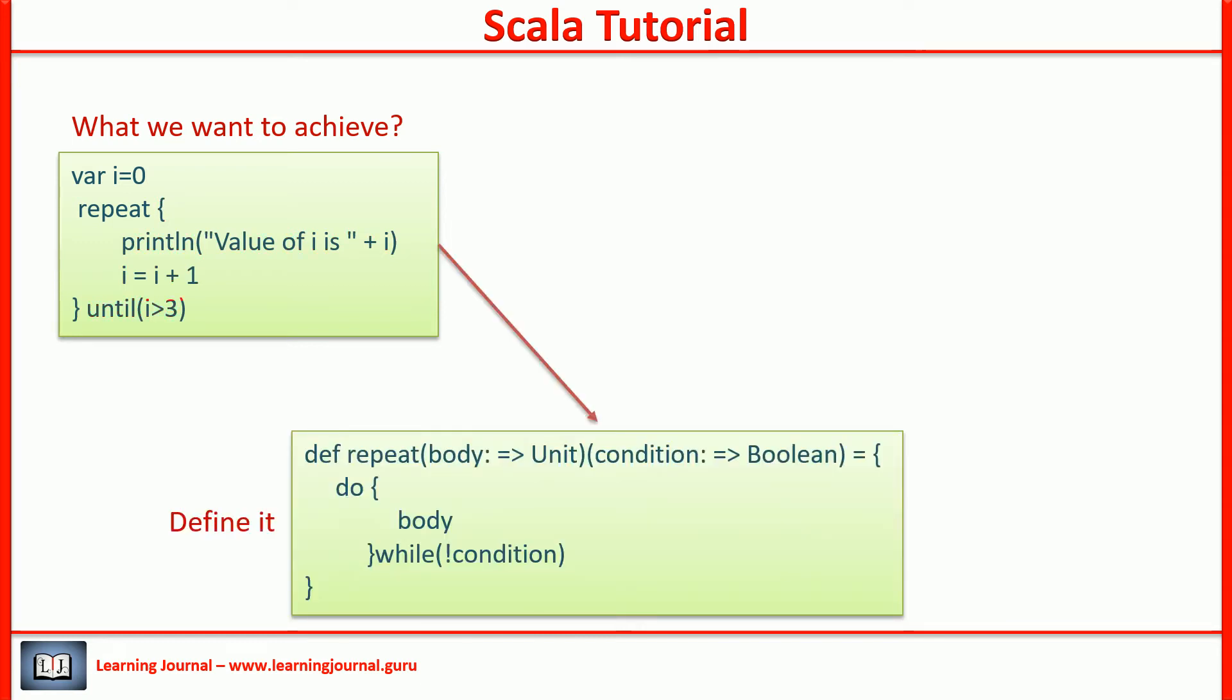Here is the first version of the code. The code is simple. It takes two arguments. We take them into two different groups to enable function currying. We will pass the body of the repeat into the first parameter. Then we will pass the condition into the second parameter.